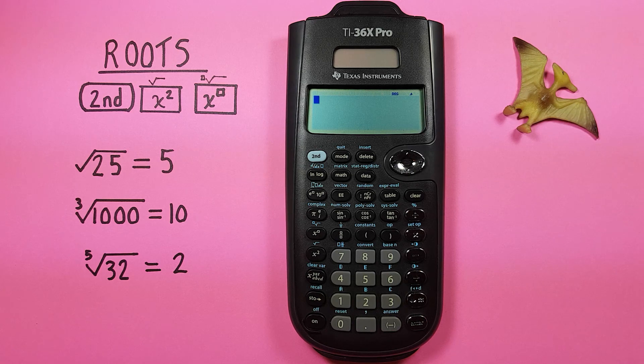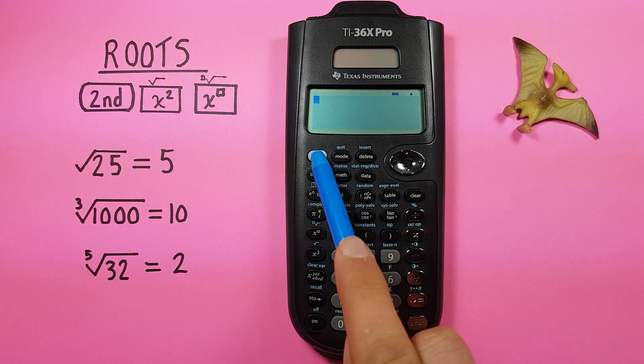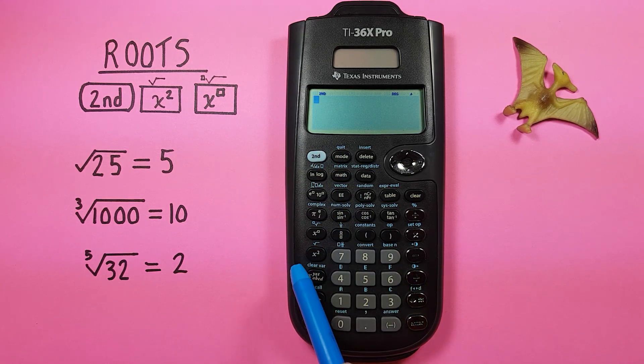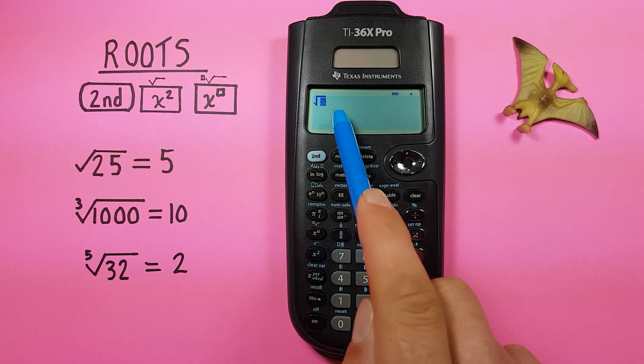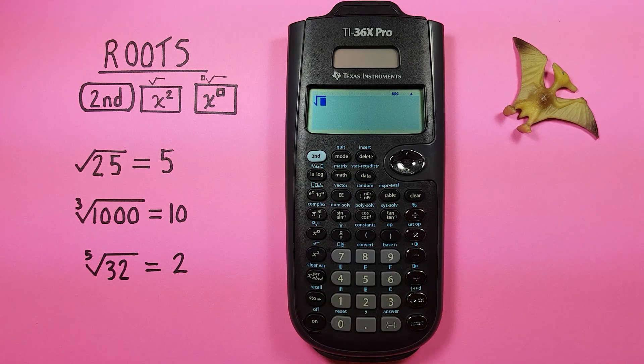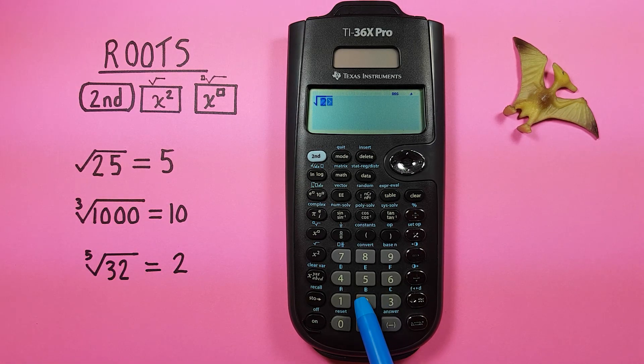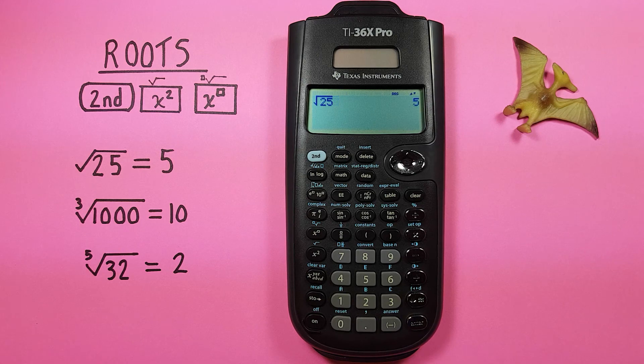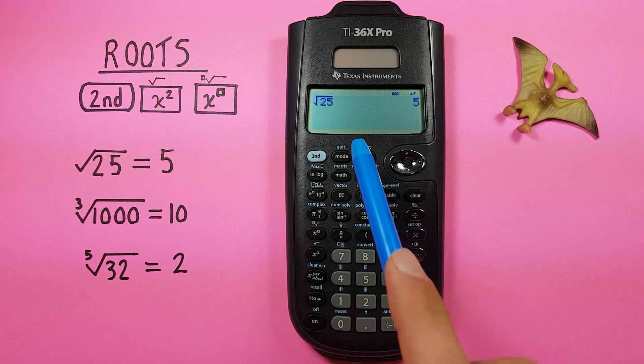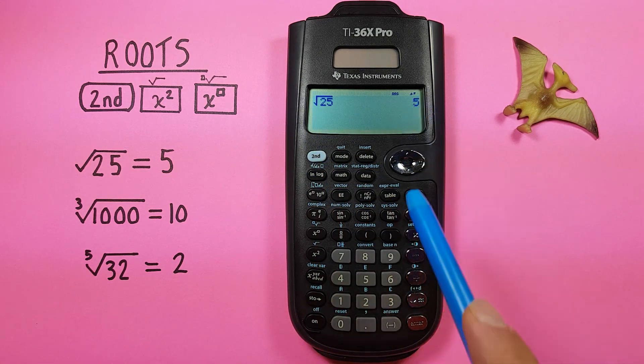If we just want to square root a number all we do is press the second function and then squared key. You can see we get the square root key there, or the square root symbol, and if we wanted to square root 25 we would just enter the 25 in underneath there, and press enter, and you can see we get square root of 25 is equal to 5.